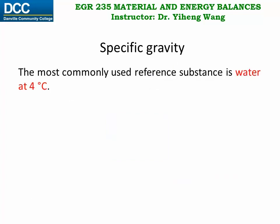For specific gravity, the most commonly used reference substance is water at 4 degrees C. Therefore, unless we specify otherwise, when we mention specific gravity in this course, we always assume that water is the reference substance. This is because its density at 4 degrees C is exactly 1 g per cubic centimeter, which is the same as 1 g per milliliter or 1 kg per liter.